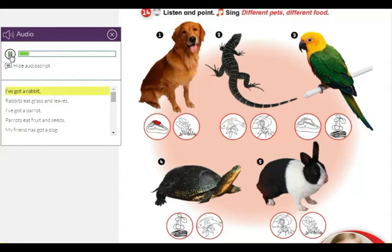I've got a rabbit. Rabbits eat grass and leaves. Parrots eat fruit and seeds.